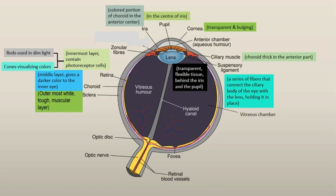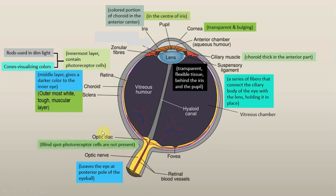We will see the difference between rods and cones. The next structure is the optic nerve, which leaves the eye at the posterior pole of the eyeball. At the spot where the optic nerve leaves, there is the optic disc, which is also called the blind spot. Here the photoreceptor cells — the rods and cones — are not present.